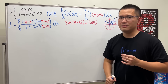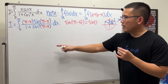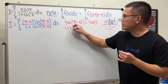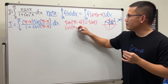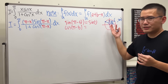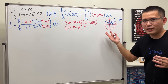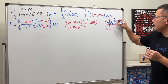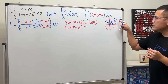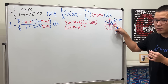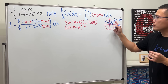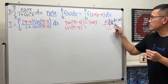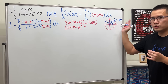Now for the cosine part: cos(π − θ). Using the same unit circle picture — cosine is the x-value. cos(θ) is the x-value on one side, and cos(π − θ) is the x-value on the other side.